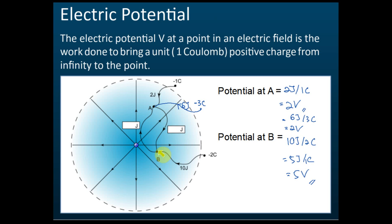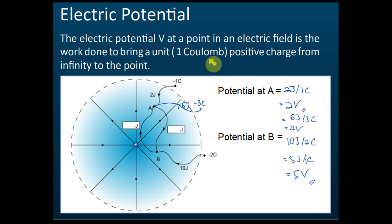So point B has a potential of 5 volts and point A has 2 volts. Point B has a higher potential — 3 volts higher. Point B can do more work, which means it will move the charge faster. The electric potential at a point in an electric field is the work done to bring one coulomb of charge from infinity to that point. If it's two coulombs, divide the work by two; if three coulombs, divide by three.